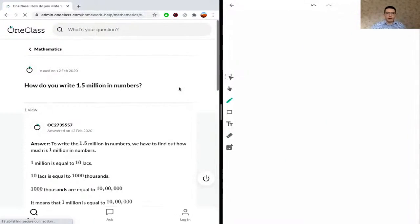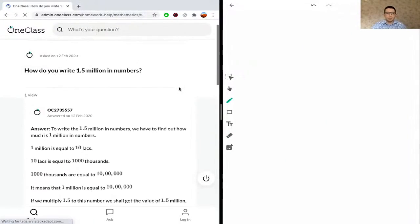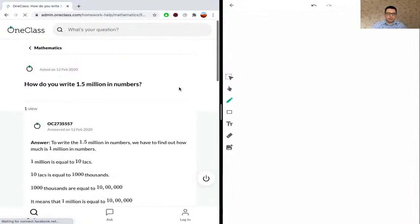Okay, so the next question that we have over here is how do you write 1.5 million in numbers? I'm assuming this is asking us just to write all the zeros associated with 1.5 million. So here, 1.5 million - this is a dot or a decimal point - in the full numerical way.